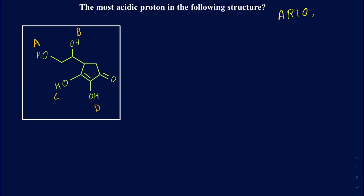So if I focus on proton A, I have proton A here and B, C, and D. Out of those four, I have to figure out which one is going to be the most acidic. To do that, we're going to get rid of each proton one by one, draw the conjugate base, and figure out which one has the most stable conjugate base. After losing whichever proton gives us the most stable conjugate base, that particular proton is going to be the most acidic.